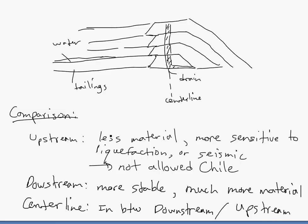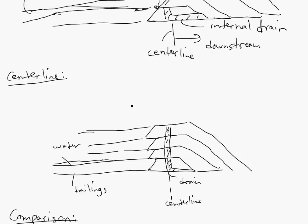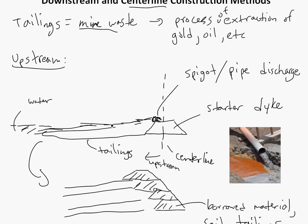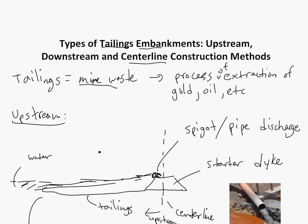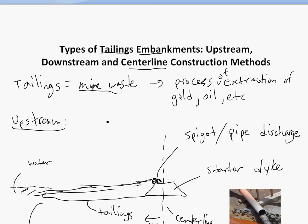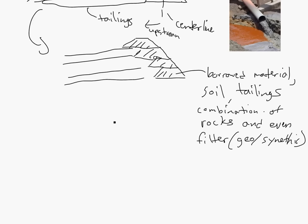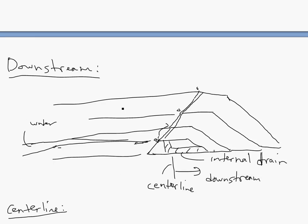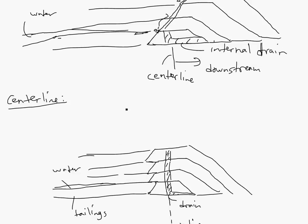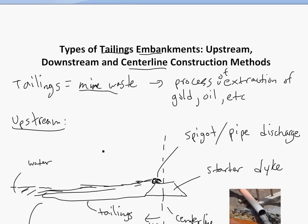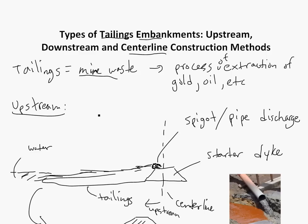That's basically a little intro to different mining construction methods for upstream, downstream, and centerline methods for embankments - basically holding the waste that is produced. There's a lot of it, especially oil sand waste, which is a huge problem particularly in Canada. Hopefully you learned a little bit about mining engineering - this is something I'm studying right now. Thanks for tuning in for another Math Easy Solution.